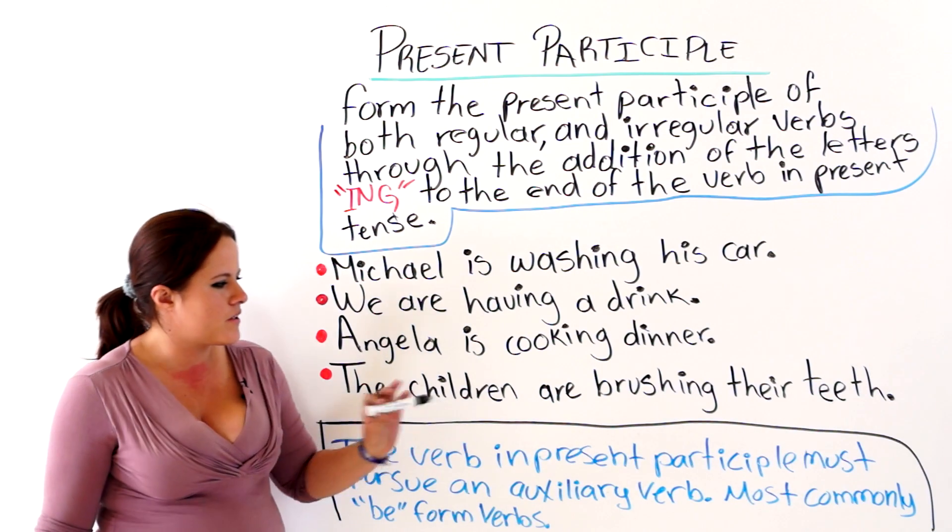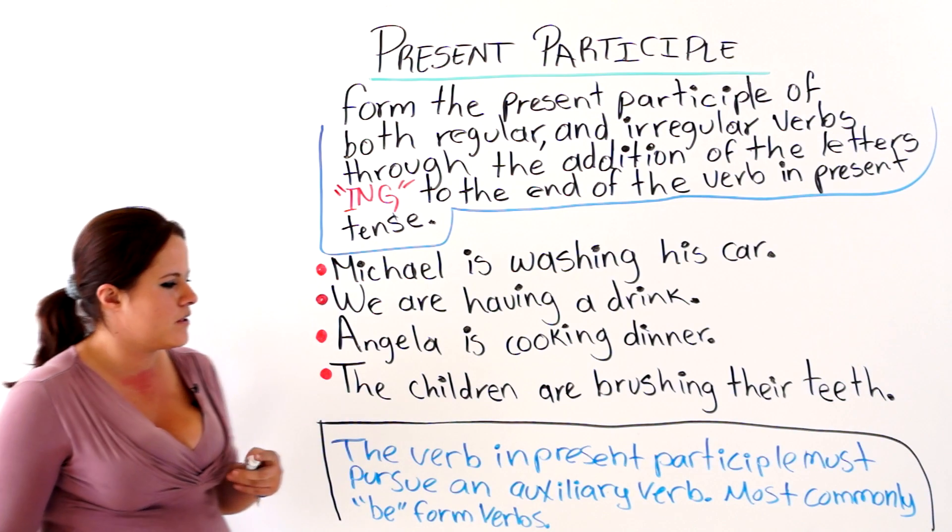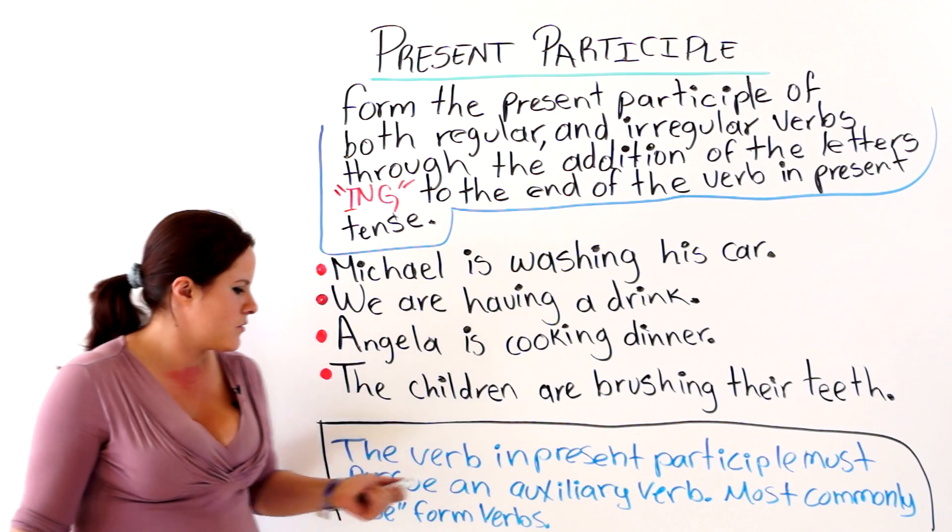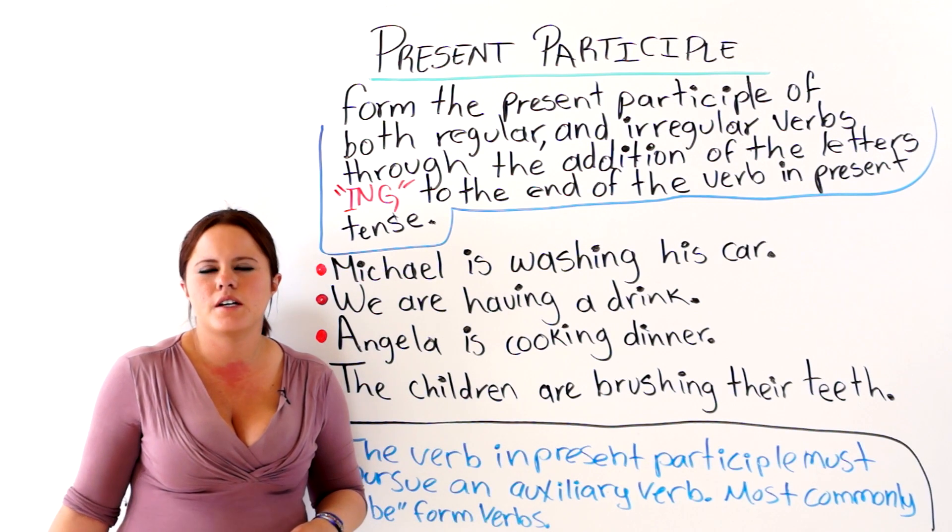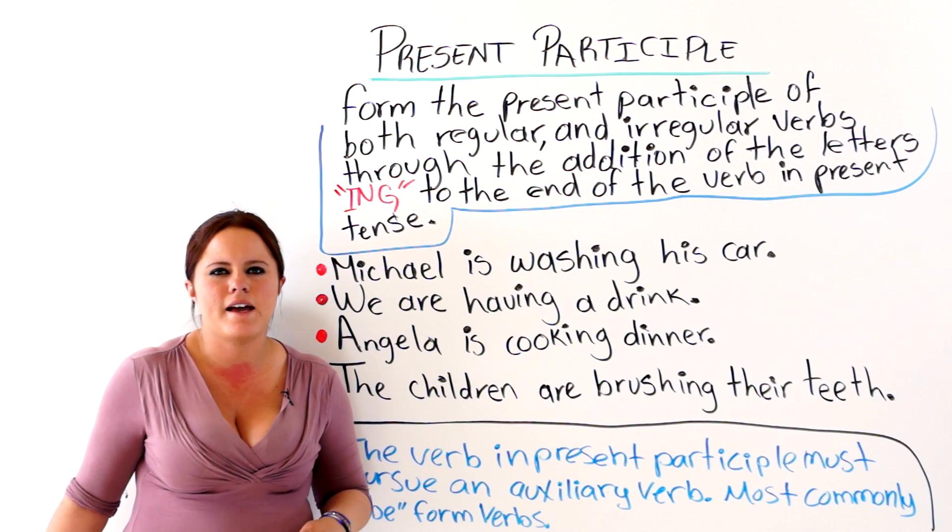And the verb in present participle must pursue an auxiliary verb, most commonly be form verbs, which are is, are, and am.